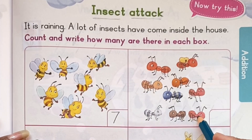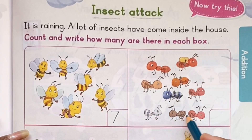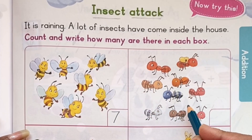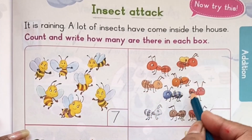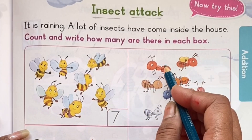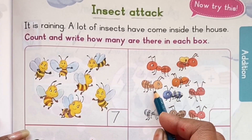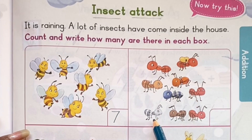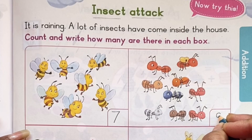In the next box, what do we see? We can see ants. How many ants do we see here? Let's count. 1, 2, 3, 4, 5, 6, 7, 8, 9. Total 9 ants.